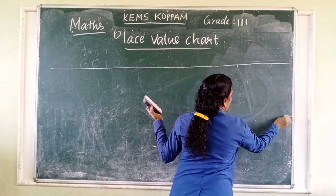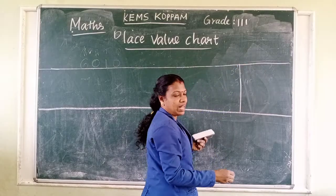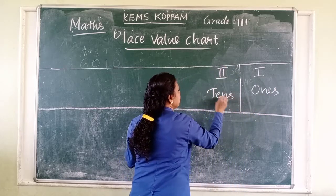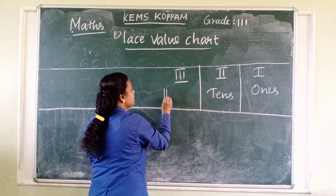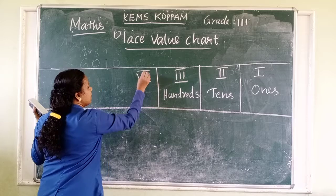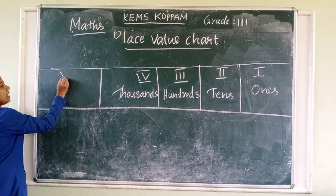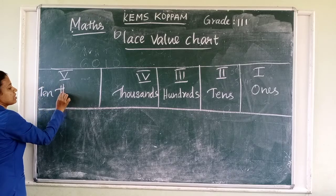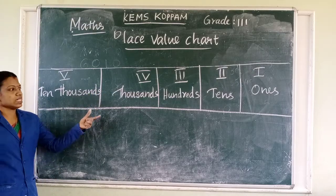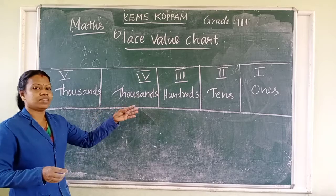Just draw a column. Count down each place — we know that. The first place is ones, second place is tens, third place is hundreds, fourth place is thousands, and the fifth place is ten thousands. So this is the place value chart. Five places are shown here: ones, tens, hundreds, thousands, ten thousands. Each place has its own value.